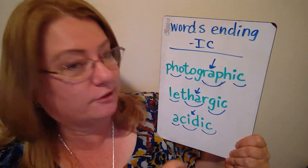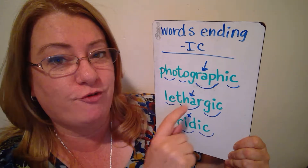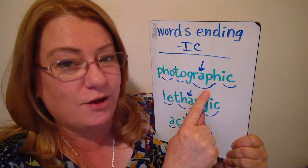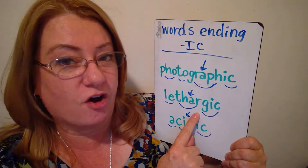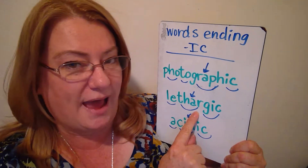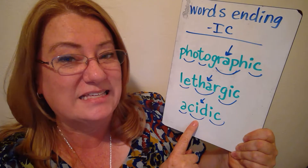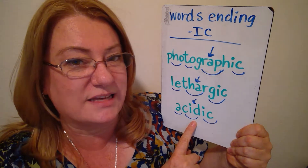Words ending in '-ic' which are adjectives: 'photographic' — you can hear the stress on the penultimate syllable. 'Lethargic' — you can hear it on the second to last, the penultimate. And 'acidic' — you can hear it on the second to last: acidic.